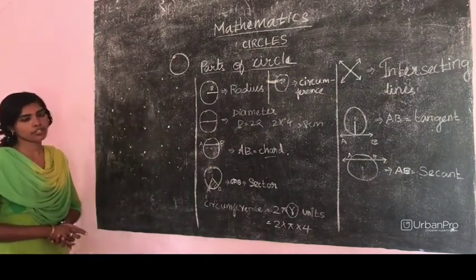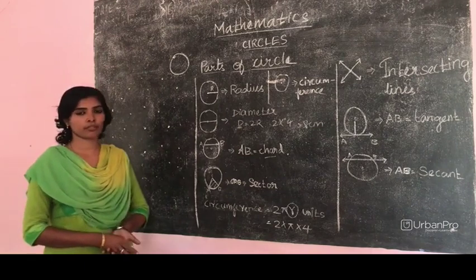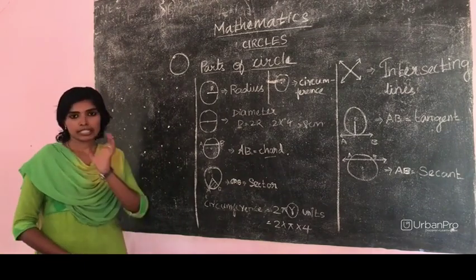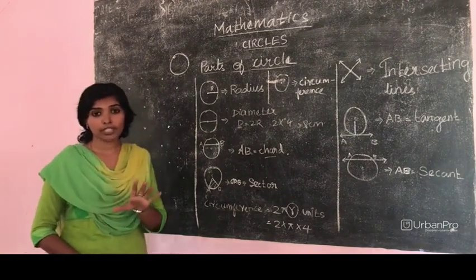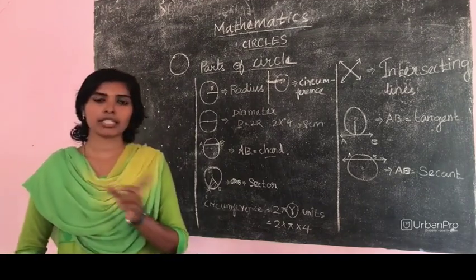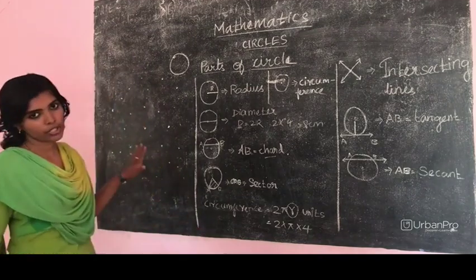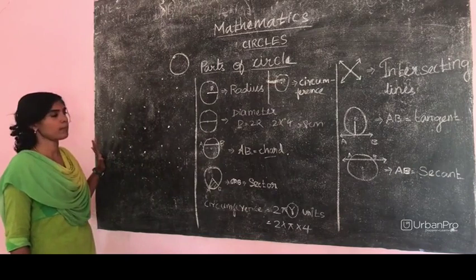Now we are going to see the definition of circle in mathematical form. Circle is defined as the collection of points which is equidistant from a single point. Now we are going to see the definition with the help of an example.